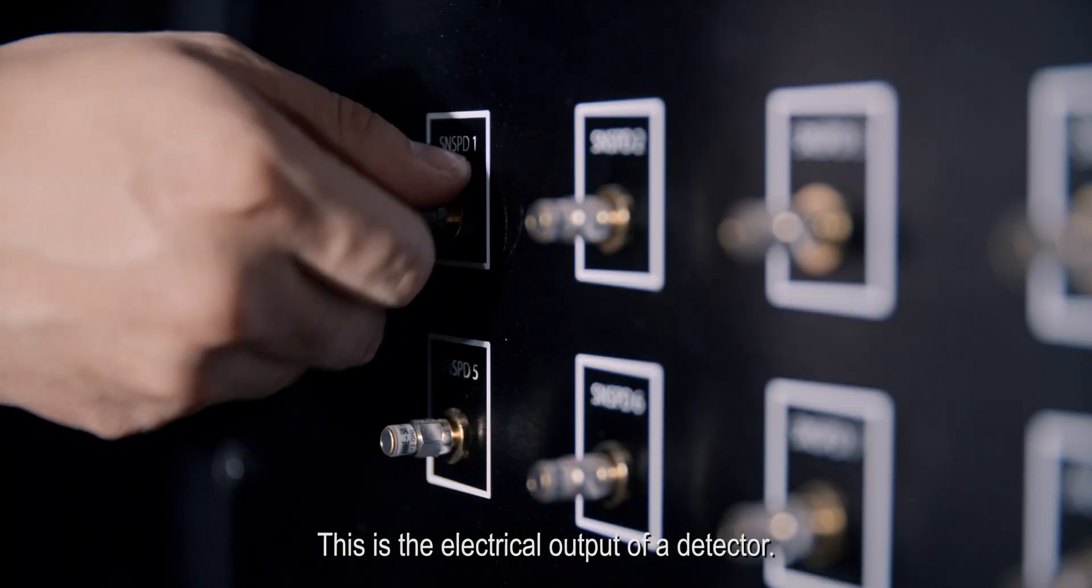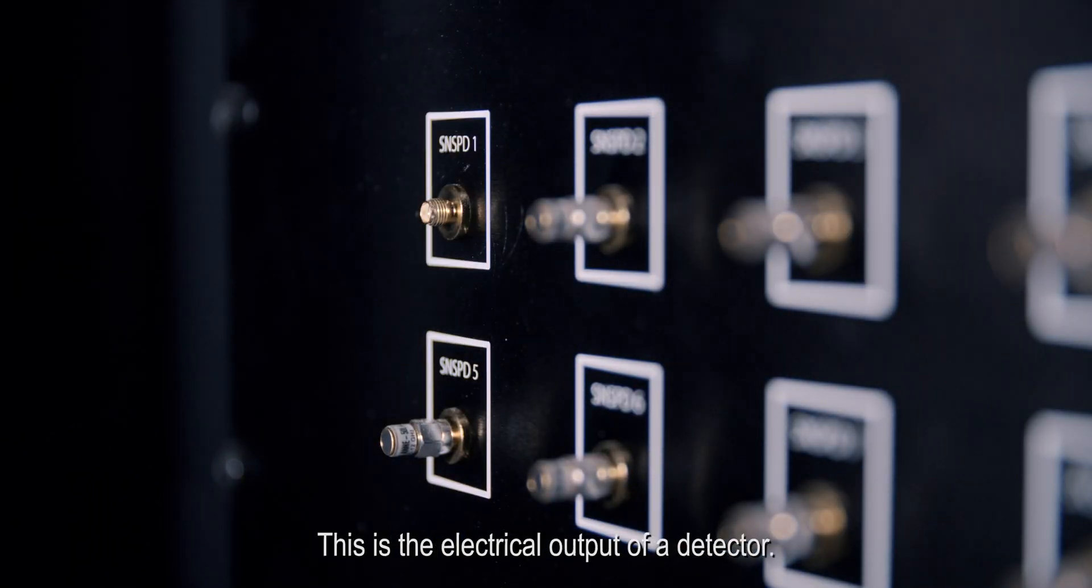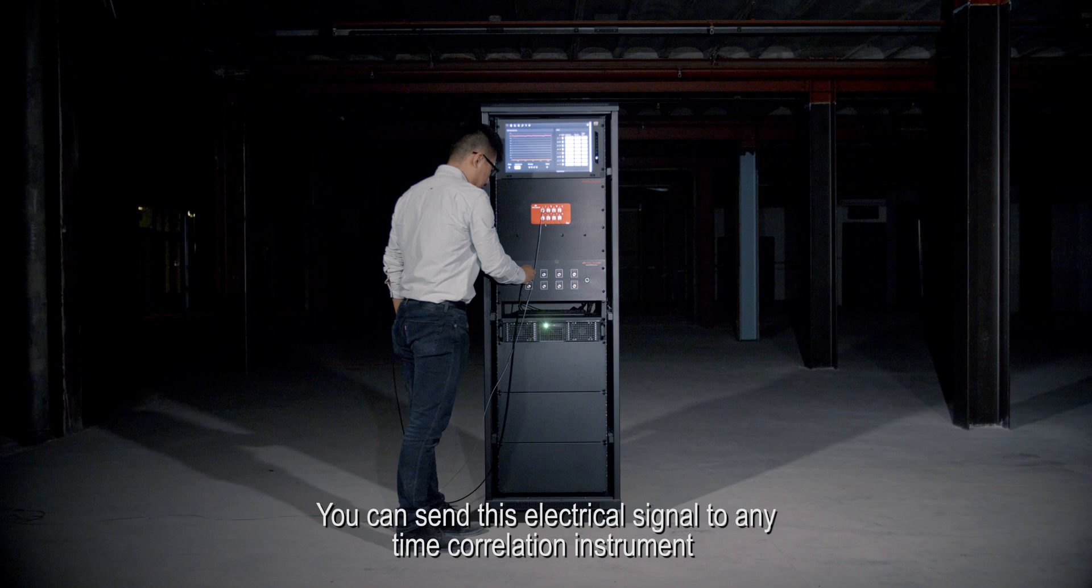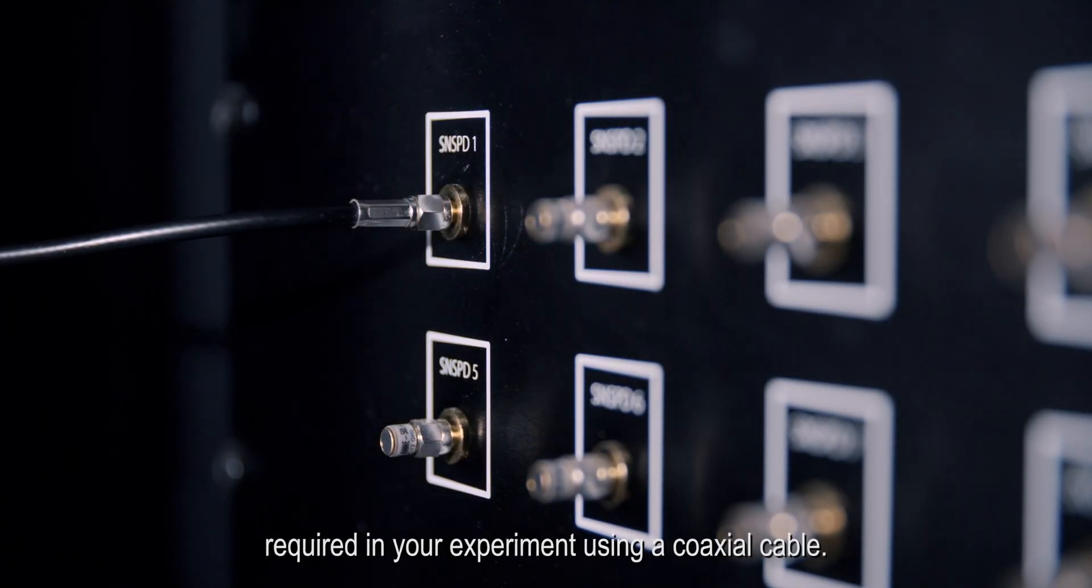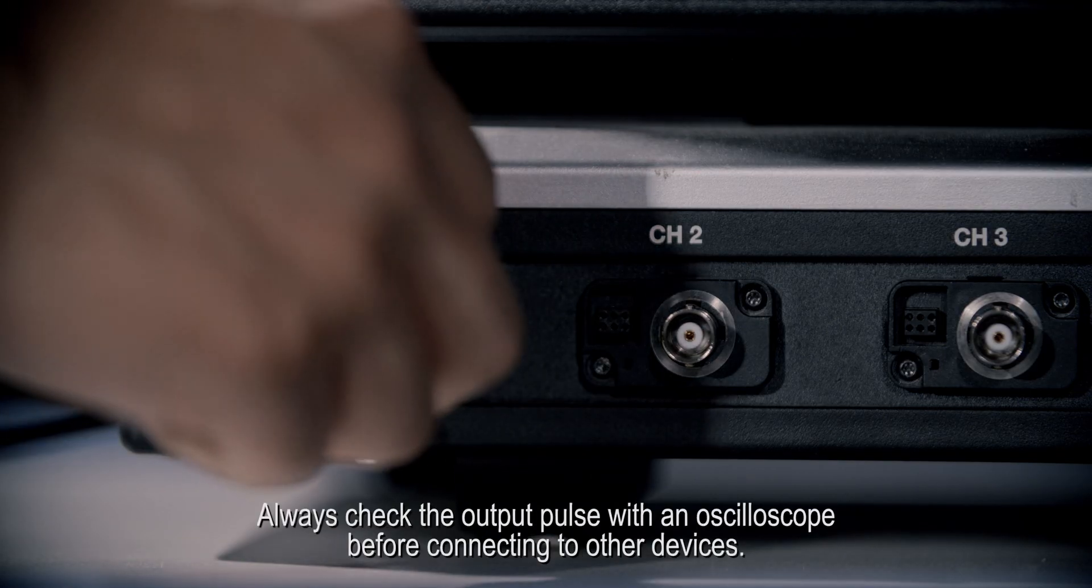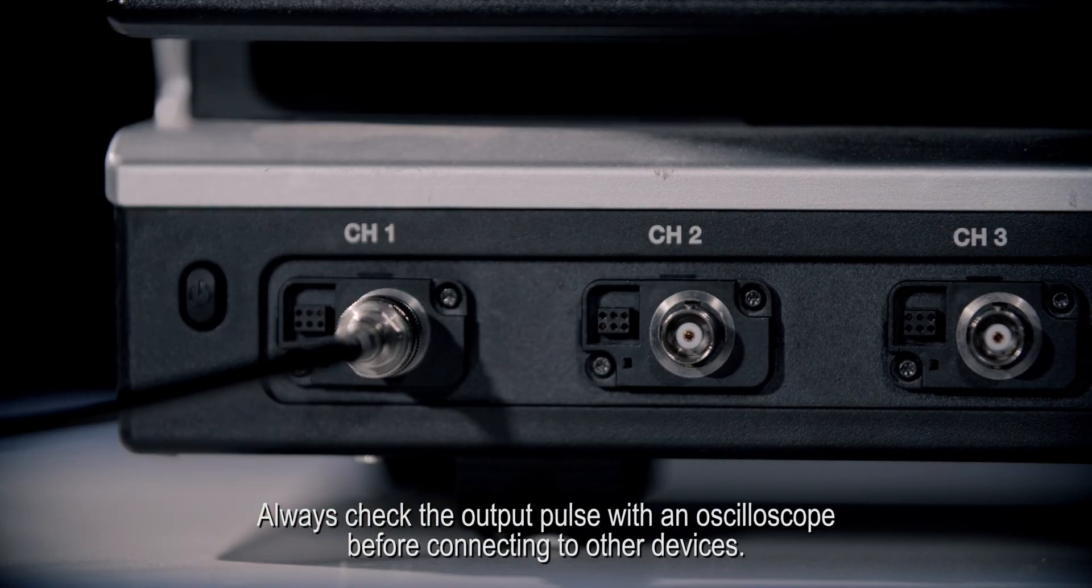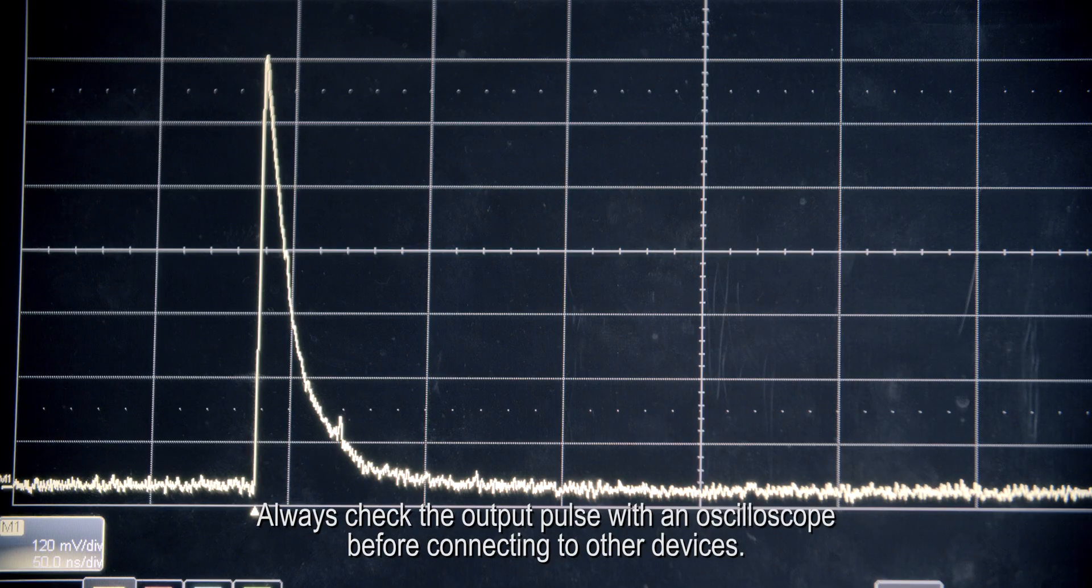This is the electrical output of a detector. You can send this electrical signal to any time correlation instrument required in your experiment using a coaxial cable. Be careful. Always check the output pulse with an oscilloscope before connecting it to other devices.